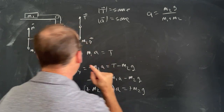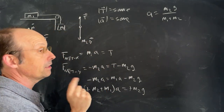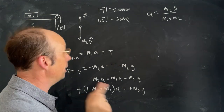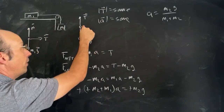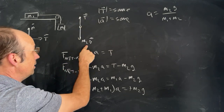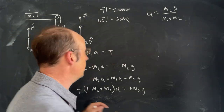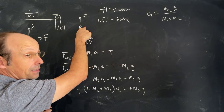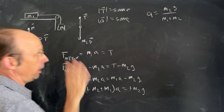I remember doing this problem as an undergraduate and making a mistake that stuck with me. Right here I said, 'Oh, the tension is M2·g — that's easy.' It's not, because that would only be true if M2 doesn't accelerate. Just remember that.